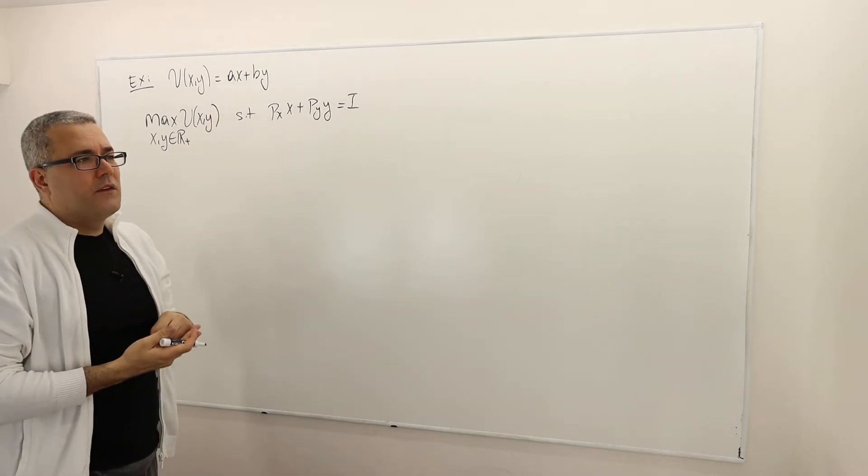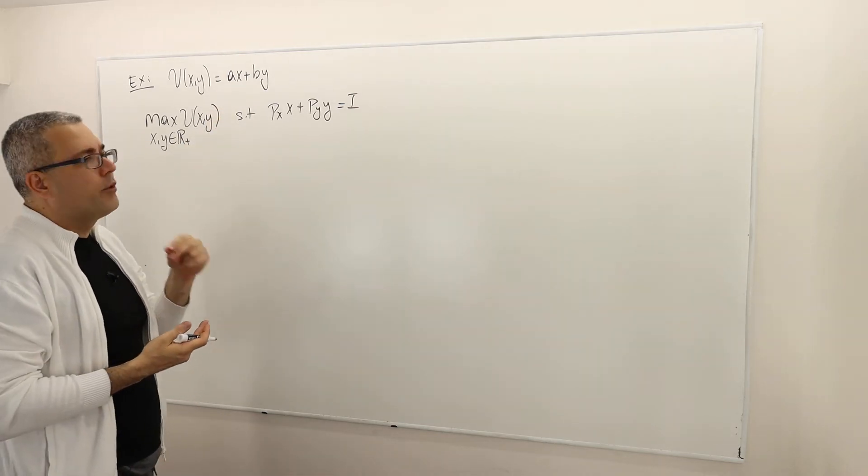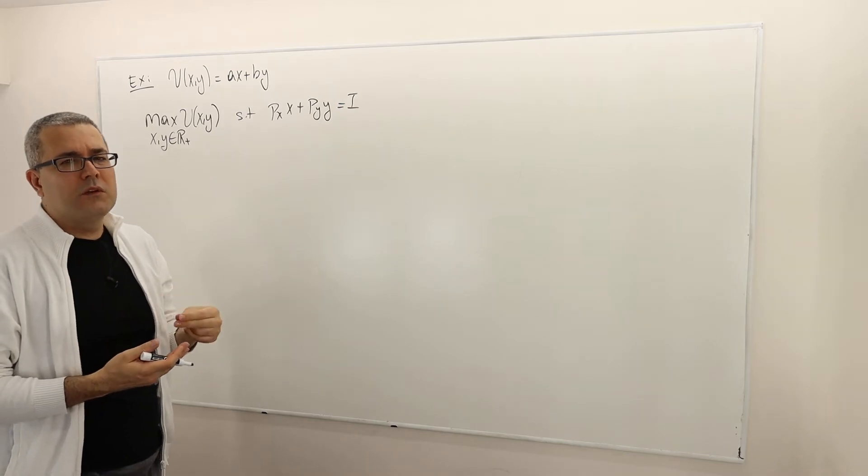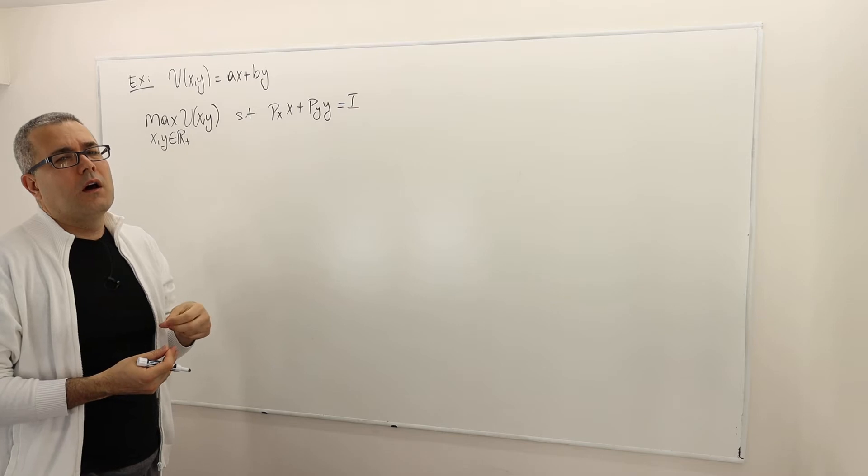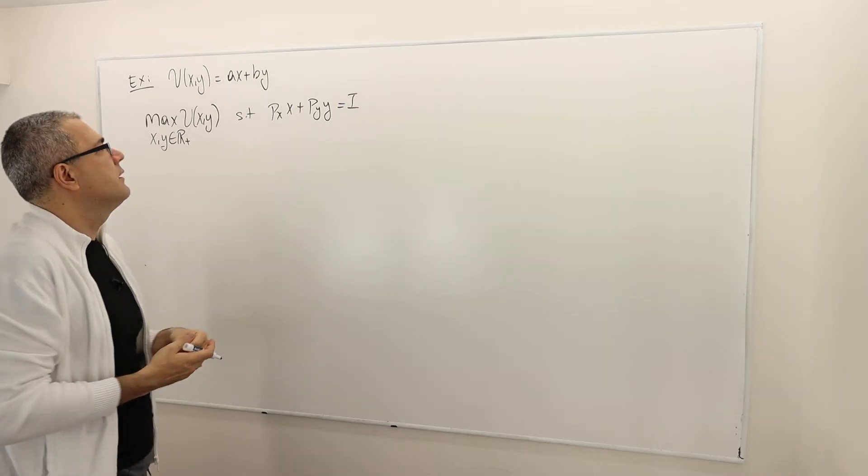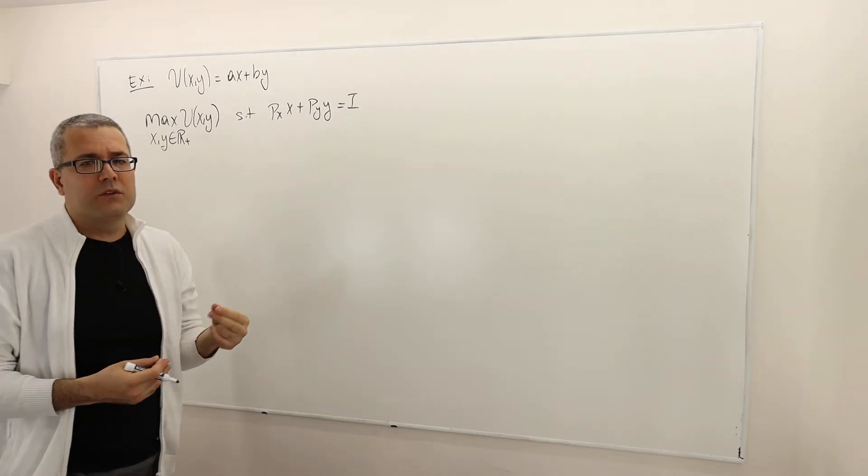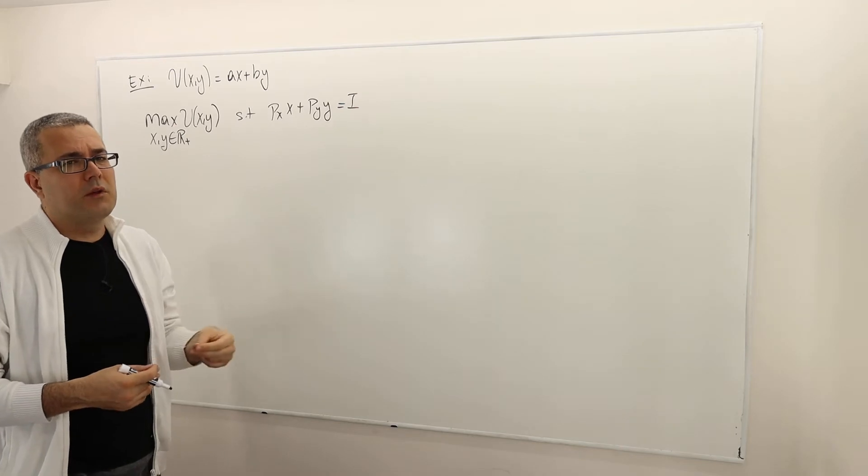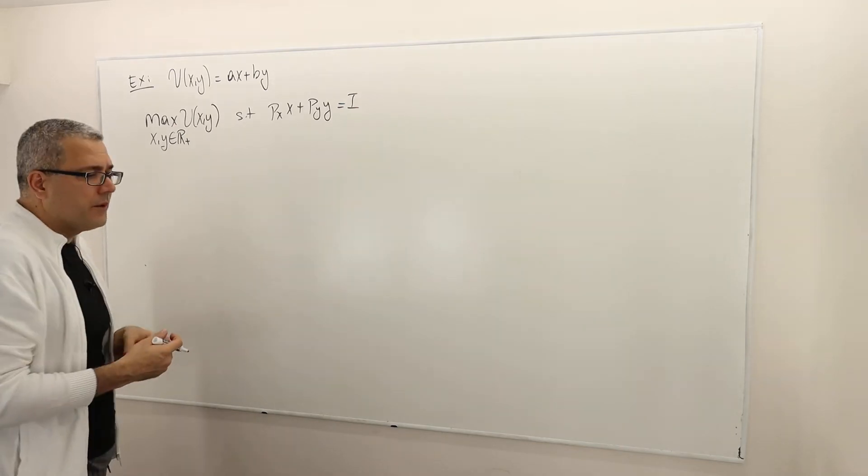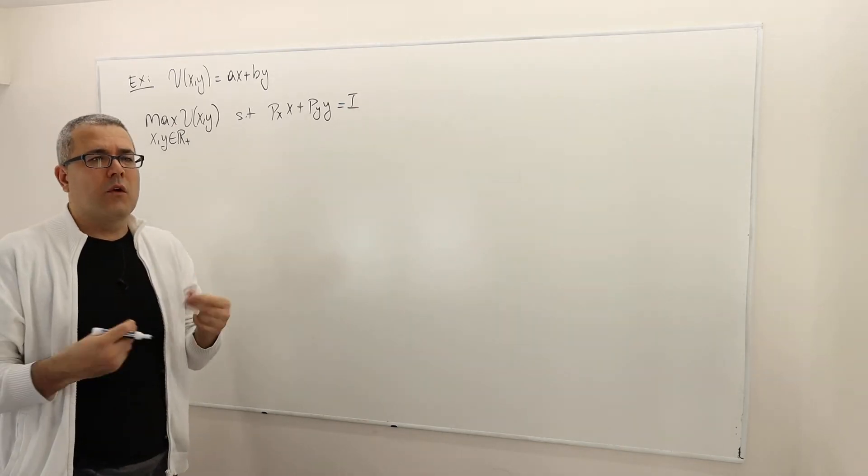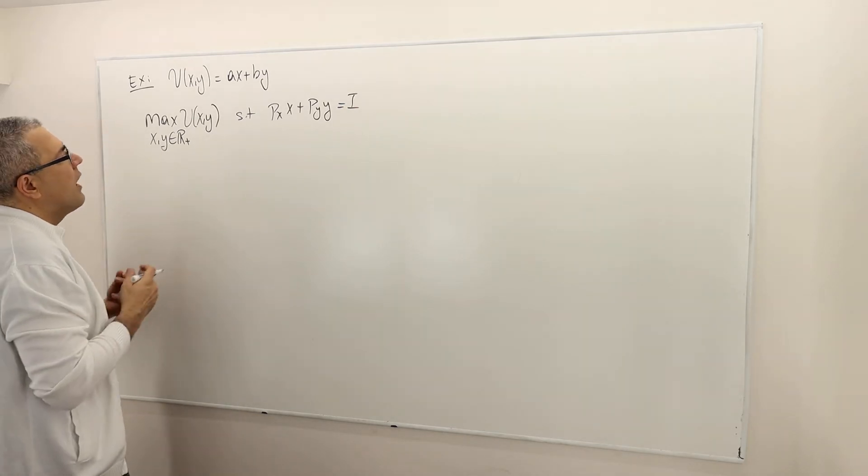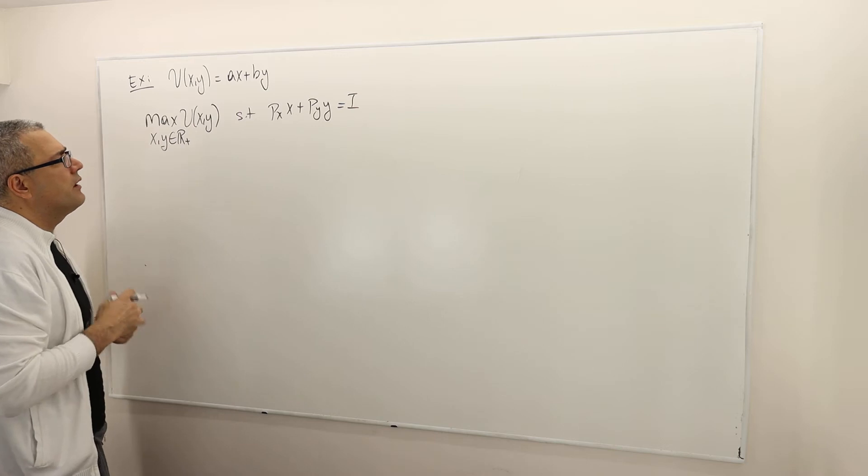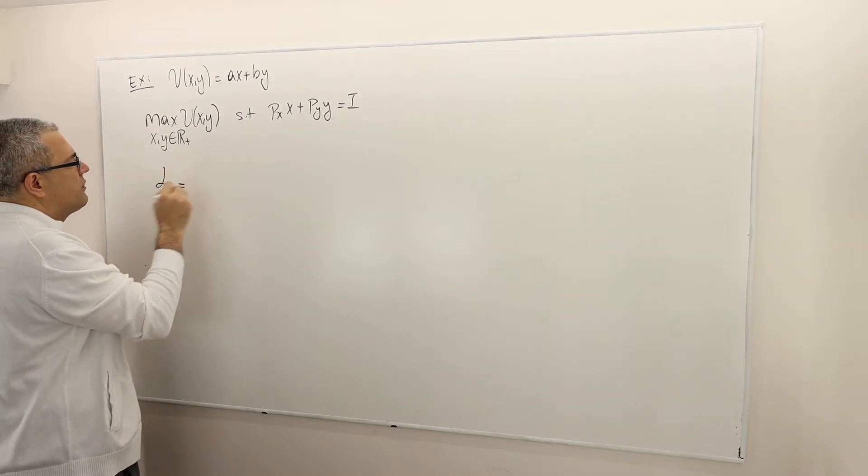So this example is a very standard perfect substitute example. As you will see, the optimal solution is not going to be always on the interior. In fact, the optimal solution most of the time is going to appear on the boundaries, meaning either X or Y is going to be zero. So how do we solve this? Well, let's try the Lagrangian as usual.